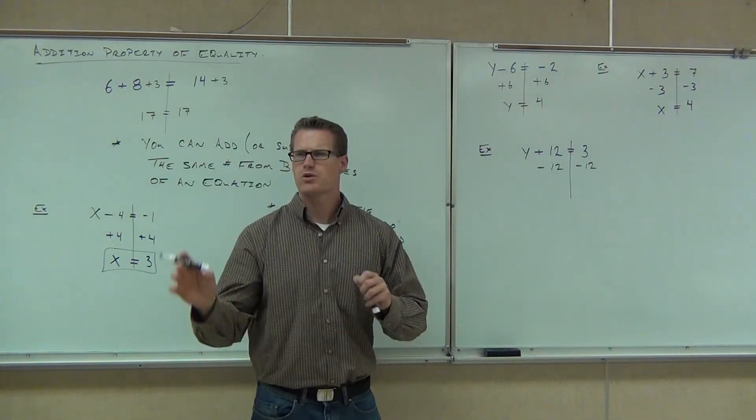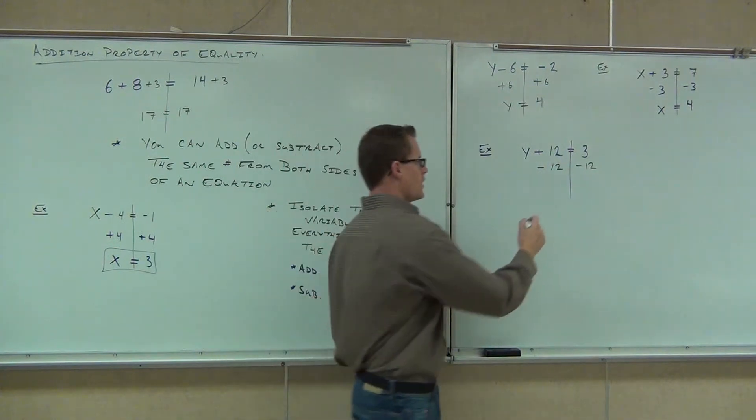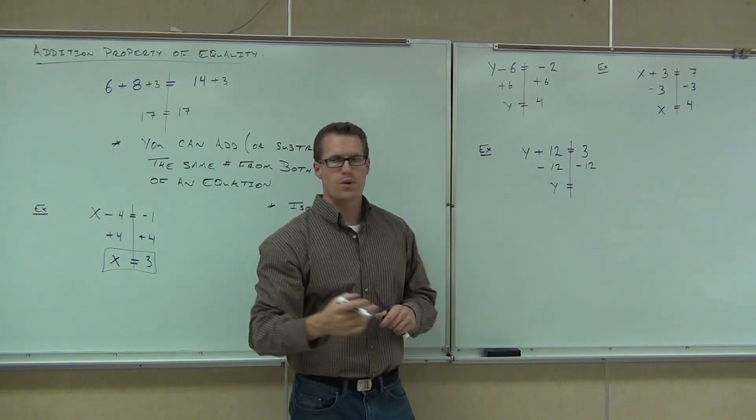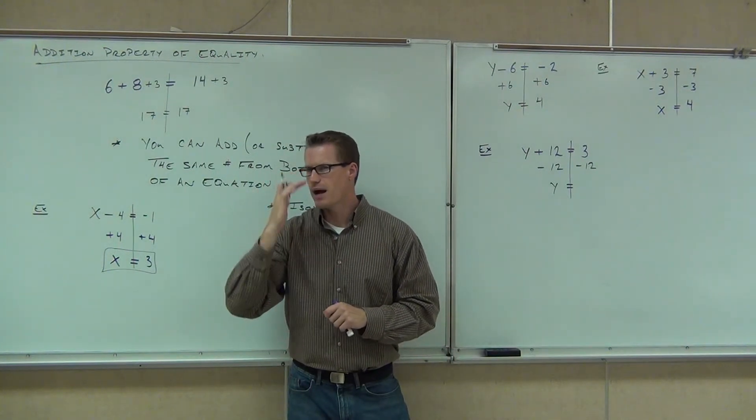On the left-hand side, what are we left with? That's what we want, right? On the left, that's why we did that whole step, is to get rid of the 12. That's why we did that. On the right-hand side, we've got three. We've got minus 12.